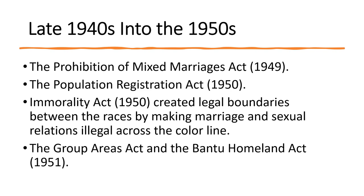Soon after coming into power in 1948, the government began to give effect to those ideas. There was a Prohibition of Mixed Marriages Act of 1949. The Population Registration Act of 1950 provided the machinery to designate the racial category of every person; its application led to the breaking up of homes — for example, where one parent was classified white and the other colored. The Immorality Act of 1950 created legal boundaries between the races by making marriage and sexual relations illegal across the color line.